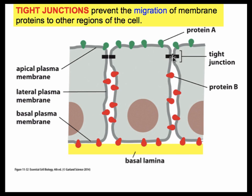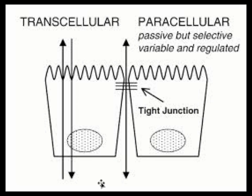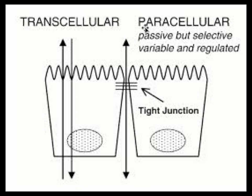Nature keeps proteins with opposite functions from intermixing by using tight junctions that bind cells together. There are two pathways by which fluids or materials may pass from one side of a tissue layer to the other. The first is transcellular — the molecule passes through the upper plasma membrane, travels through the cytoplasm, then leaves through the lower plasma membrane. The alternative is paracellular — molecules travel from one side to the other without passing through any plasma membrane, simply sneaking between two cell membranes.